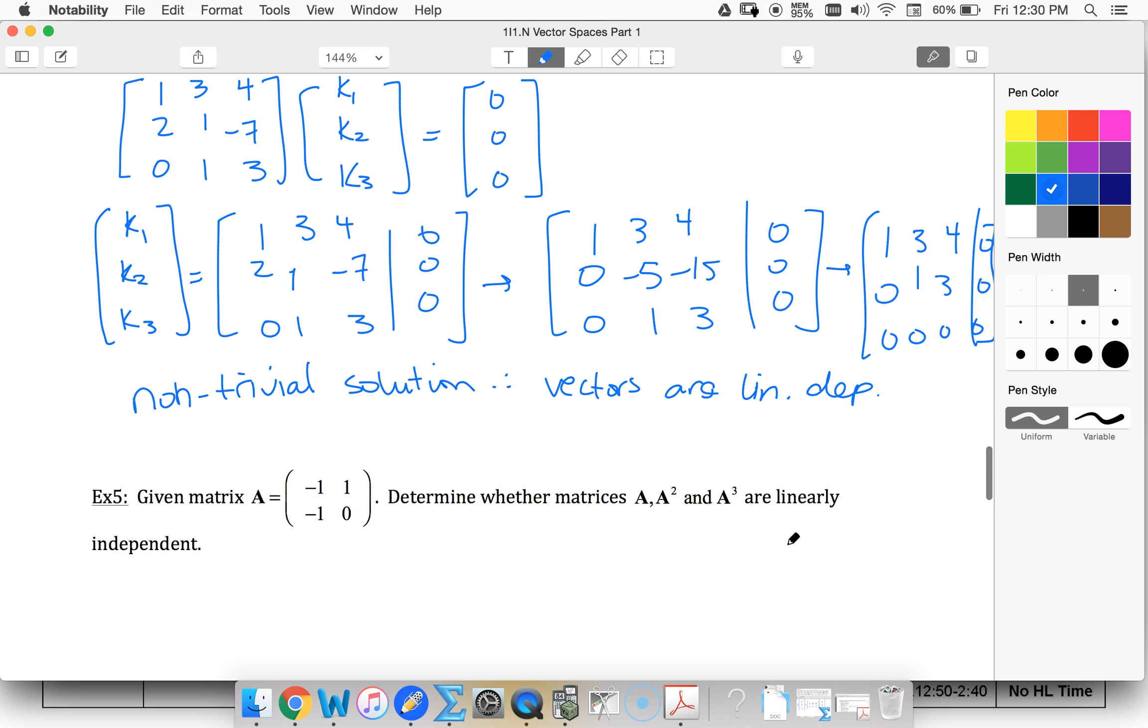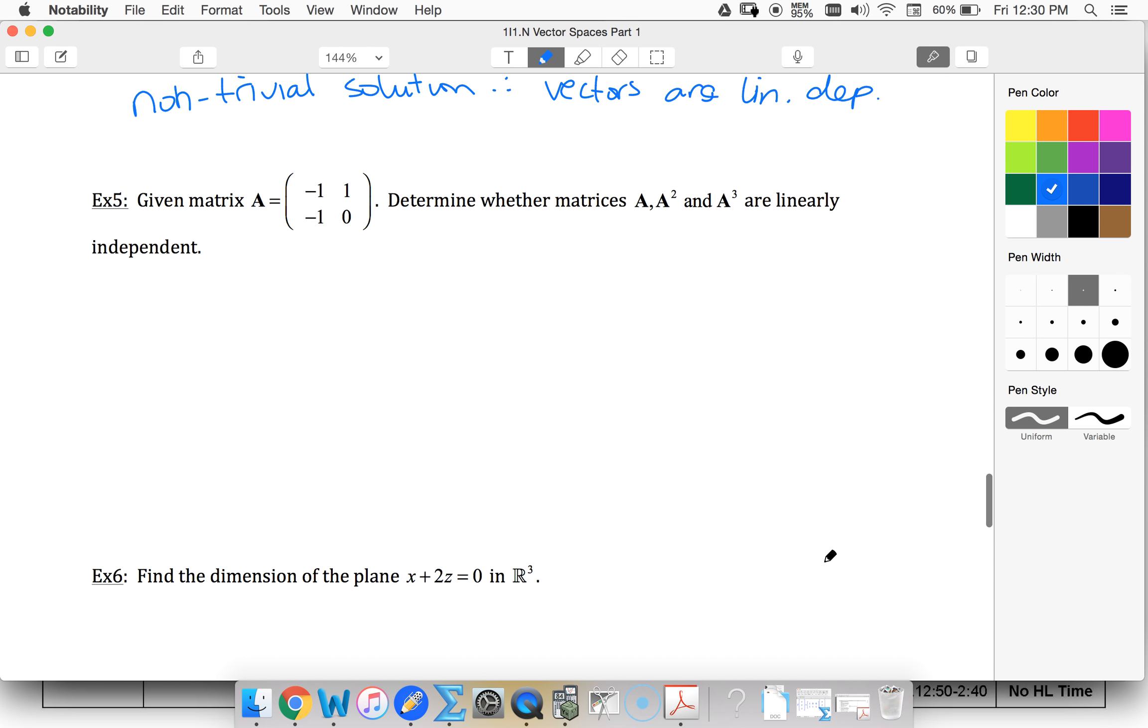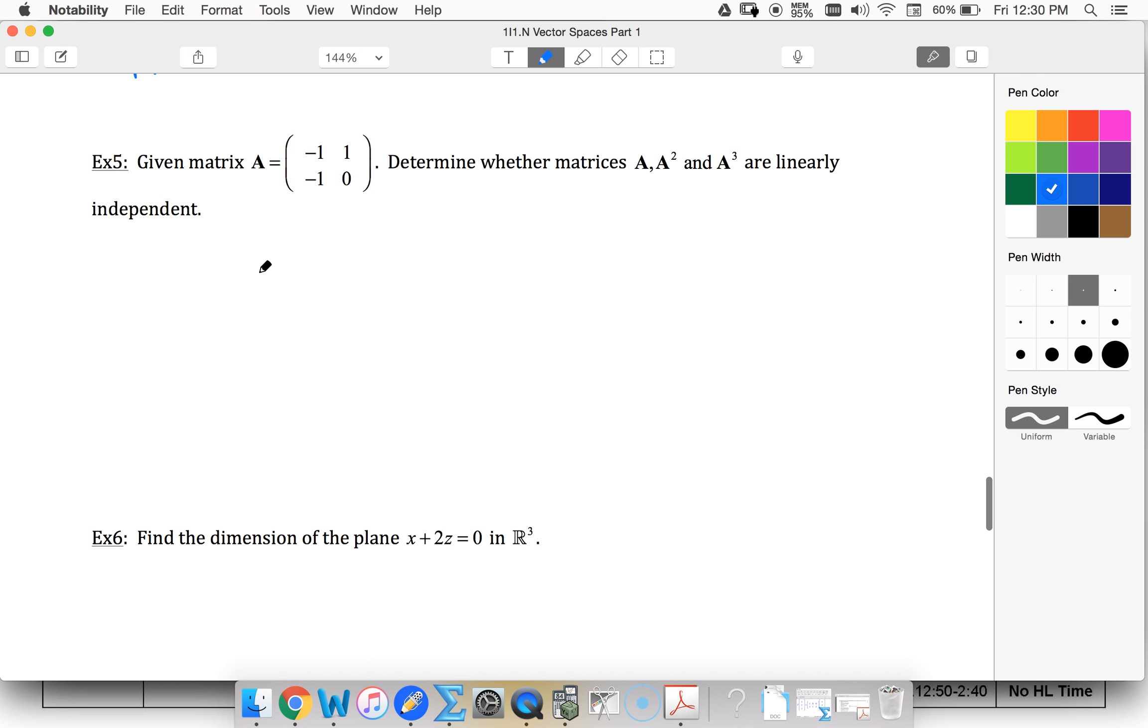All right, again, linear independence. We're looking at a system k1A plus k2A² plus k3A³ equal to 0. And we're looking for the non-trivial solution. So k1A, well, that's going to be -k1, k1, -k1, 0.